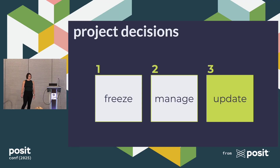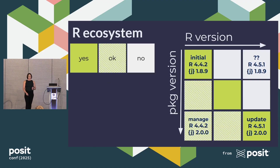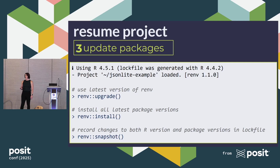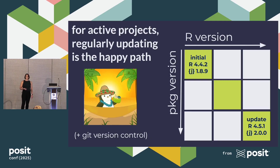What about update? Update means I want to bring everything forward into the future, including my R and package versions. In our R ecosystem map, this is a great place to be. There are three steps: first, execute renv::upgrade() to upgrade RNV to the latest available version. Then execute renv::install() to install all latest package versions. And lastly, snapshot to record those versions to the lock file. If you're actively working on a project, regularly updating is the happy path — it allows you to reckon with upgrading your package versions in a controlled manner.